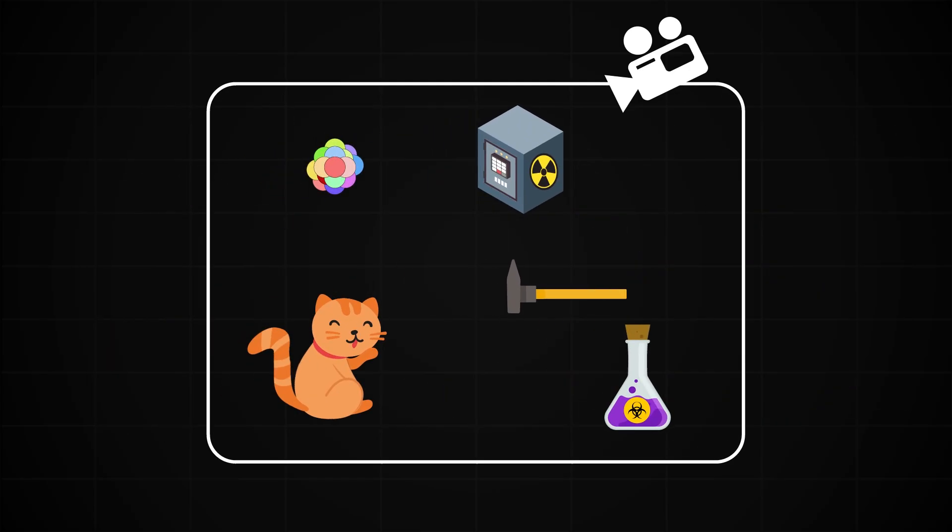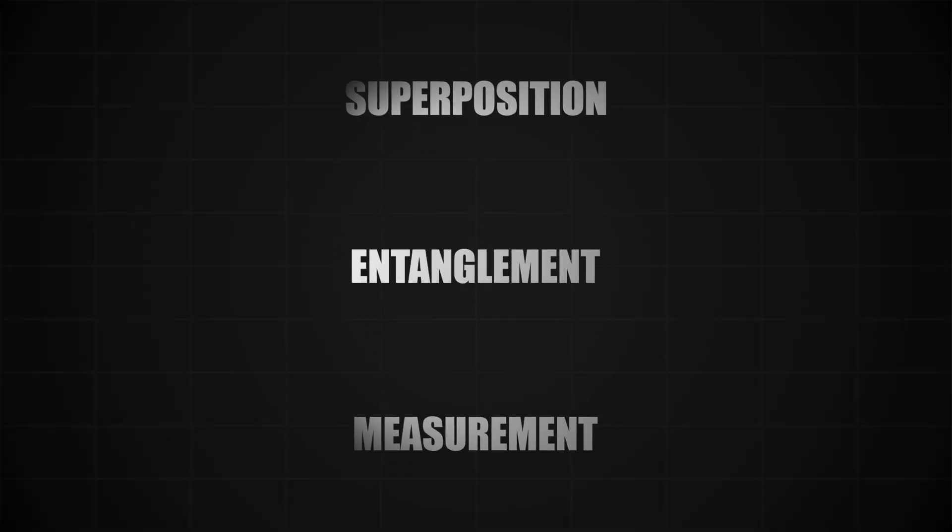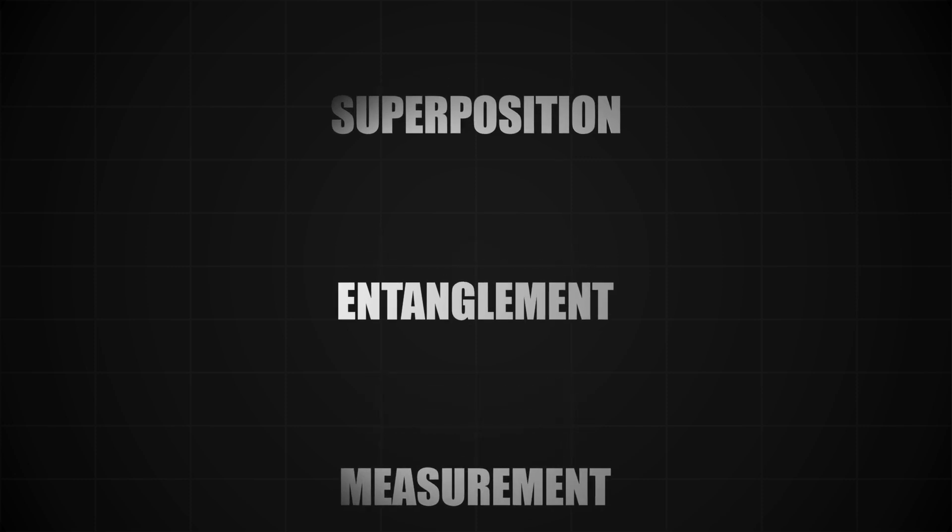But what if I told you there's actually a better way to think about Schrödinger's Cat, and in fact a better way to think about quantum mechanics entirely? To get there, we need to examine the three key components of Schrödinger's Cat: superposition, entanglement, and measurement. If quantum mechanics feel strange, maybe one of these ideas is flawed.